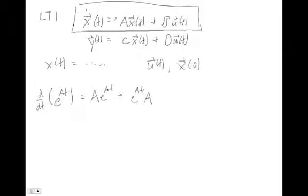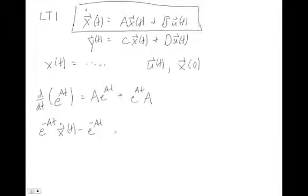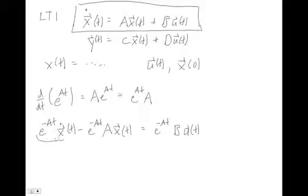We go back to our main state-space equations and pre-multiply both sides by e^(-At), also bringing the Ax term to the left side. So we have e^(-At)·x-dot minus e^(-At)·Ax equals e^(-At)·Bu(t). Looking at the left side, we can recognize this is actually d/dt of the quantity e^(-At)·x(t), by the chain rule.